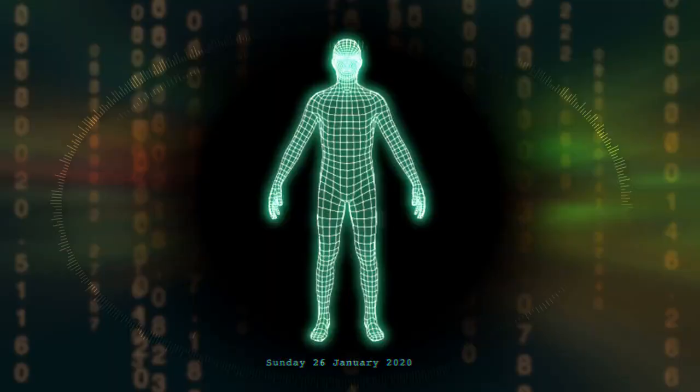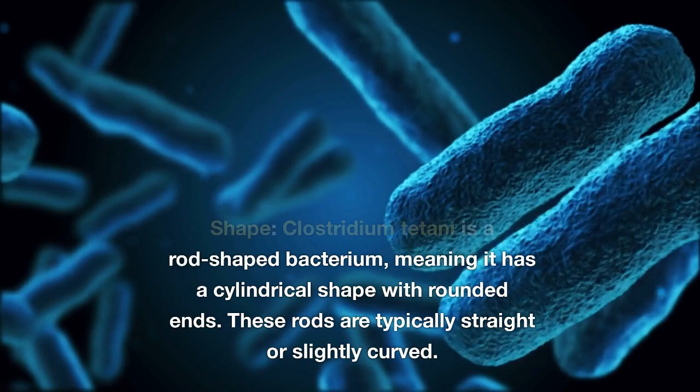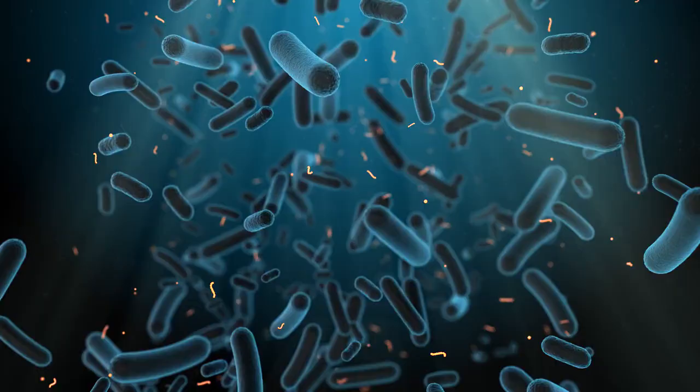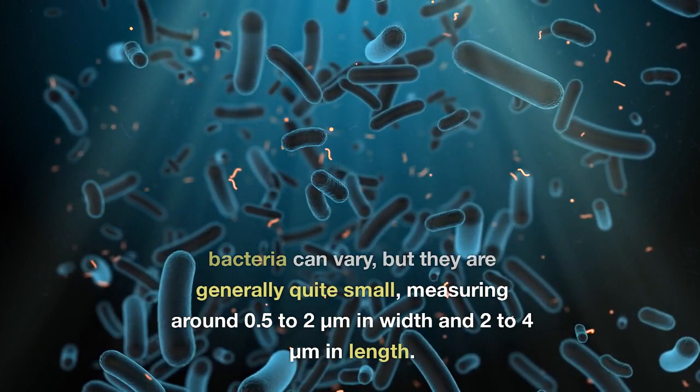About the causal agent of tetanus. Shape: Clostridium tetani is a rod-shaped bacterium, meaning it has a cylindrical shape with rounded ends. These rods are typically straight or slightly curved. Size: The size of Clostridium tetani bacteria can vary, but they are generally quite small, measuring around 0.5 to 2 micrometers in width and 2 to 4 micrometers in length.